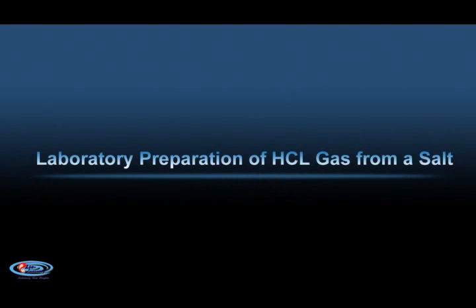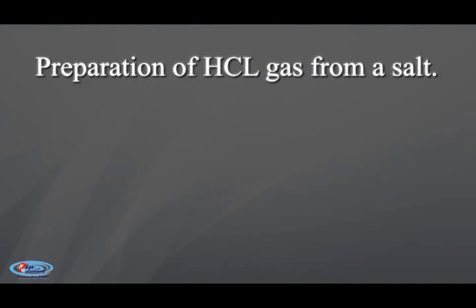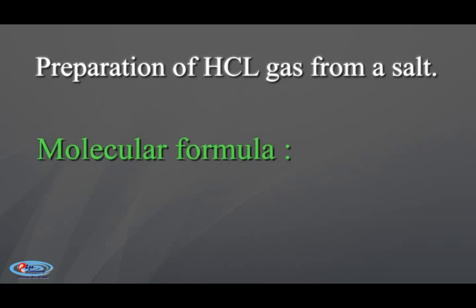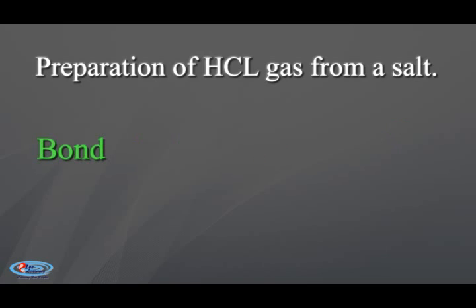Hello friends, today we will see the laboratory preparation of HCl gas. First of all, let me tell you what hydrogen chloride is. Its molecular formula is HCl, molecular mass is 36.5, and it is formed with a covalent bond.